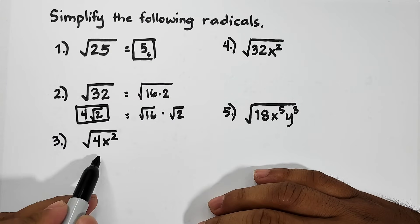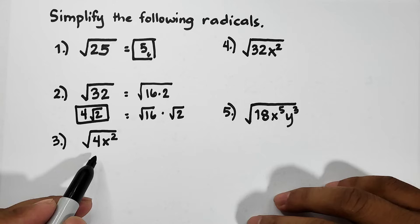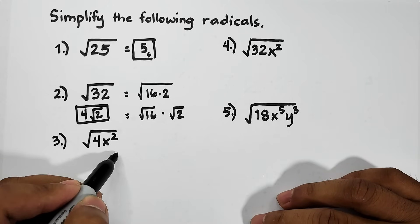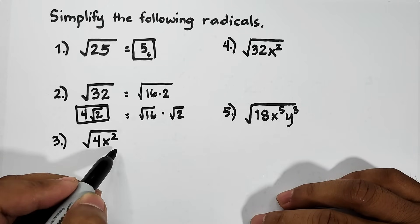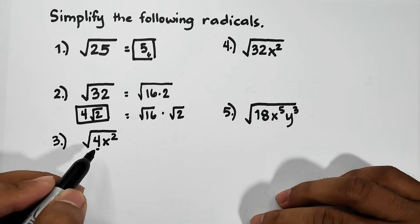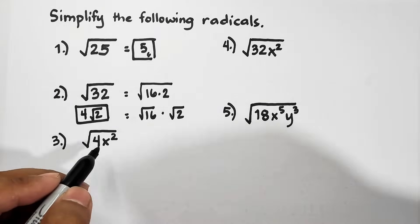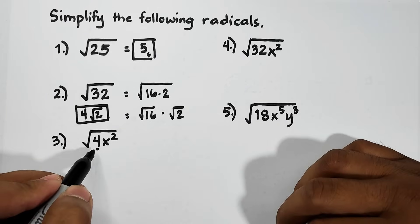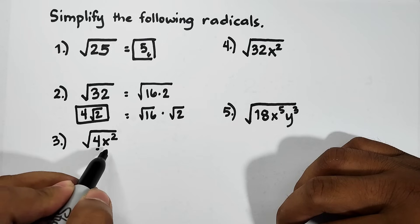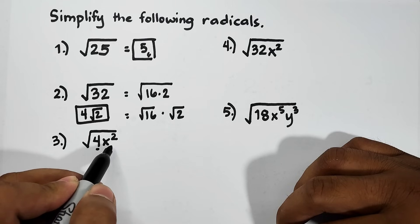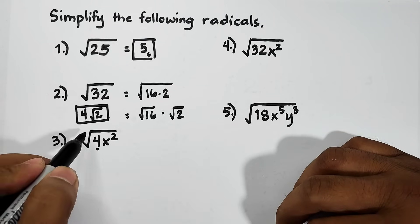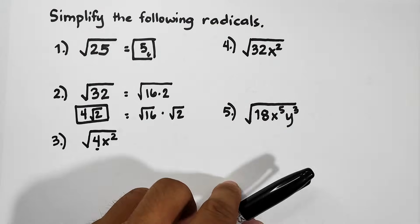Now let's move on with item number 3. Number 3, we have the square root of 4x squared. Our 4 is a perfect square, so we can get a perfect root of 4. And here, how are we going to get the square root of x squared, since the index is 2?